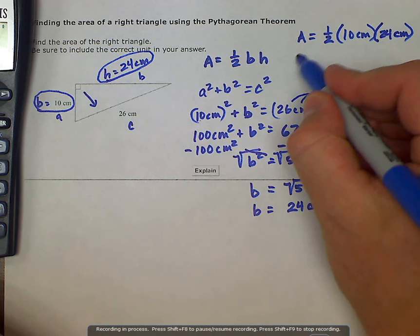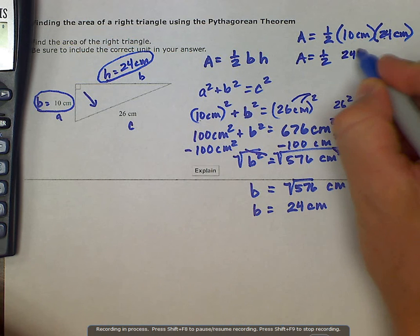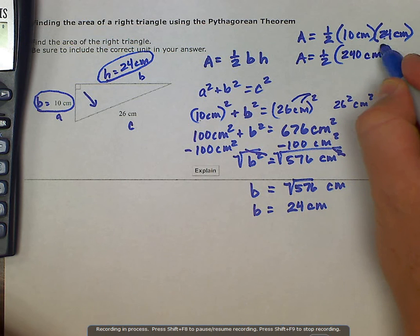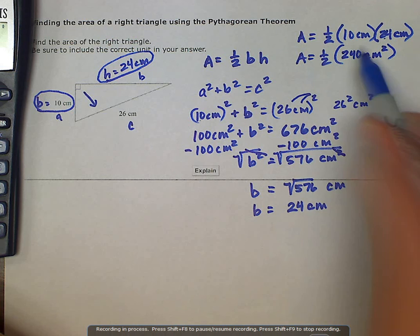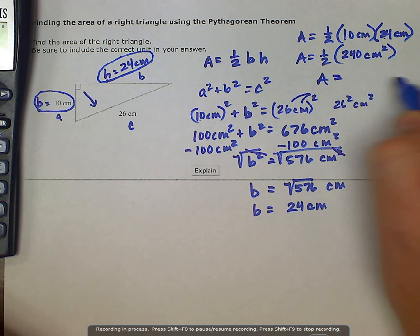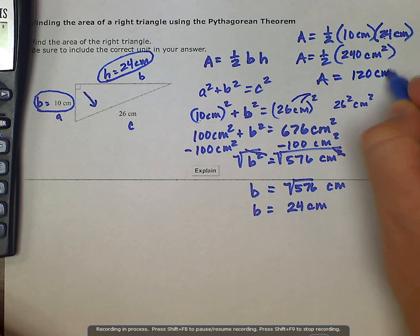And then we can resolve this multiplication. So our area is equal to 1 half. Well, 10 times 24 is 240. And then centimeters times centimeters is centimeters squared. So now we can take 1 half of 240, and our final answer is our area is equal to 120 centimeters squared.